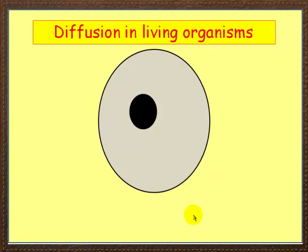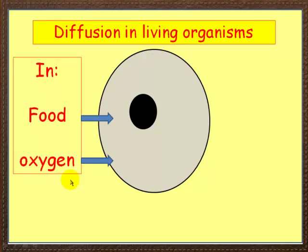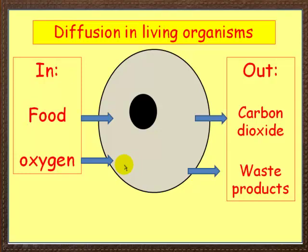Let's look at living organisms. Here's a very simple animal cell. Let's think about what has to diffuse into an animal cell. Food and oxygen need to diffuse in, and coming out we lose carbon dioxide and waste products, again by diffusion.